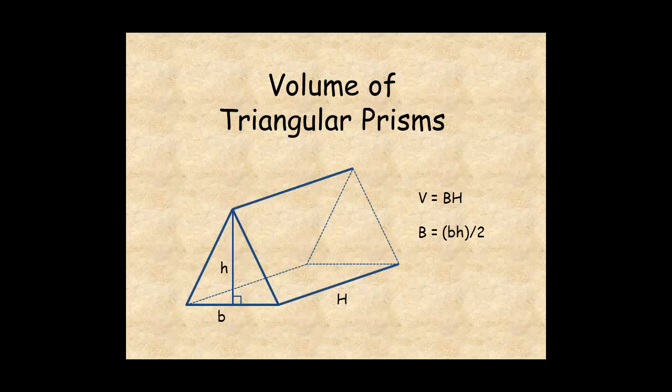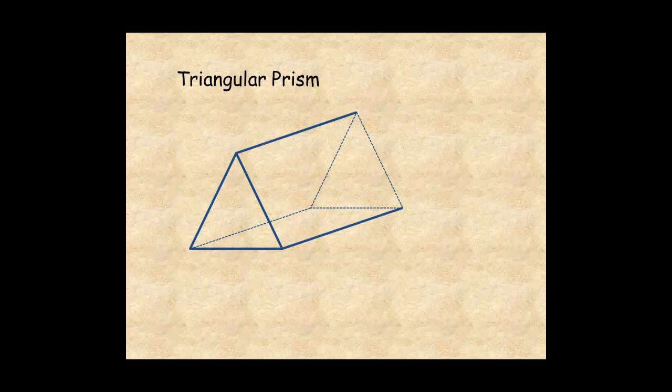This lesson shows you how to find the volume of triangular prisms. A triangular prism has bases and faces. The bases are two parallel congruent triangles. The faces are three congruent rectangles.